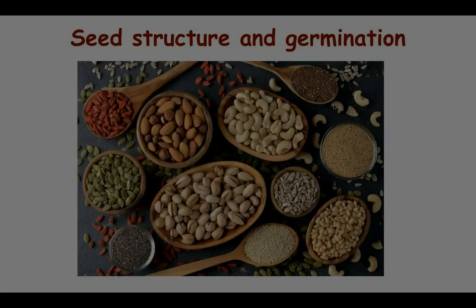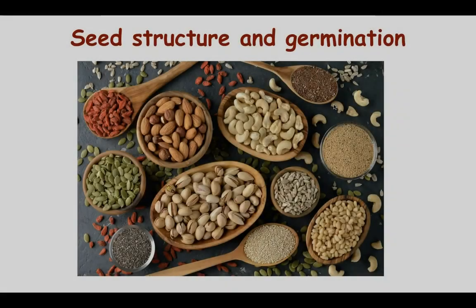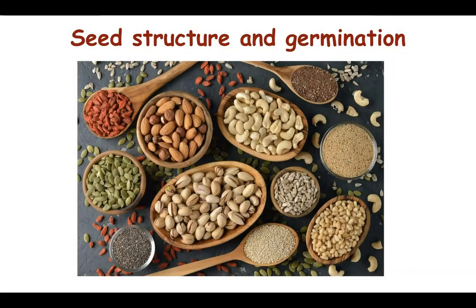Hello dear students, today we will be doing the chapter seed structure and germination. Seeds are formed once the flower has undergone maturity and the ovules change into the seeds, and the ovary changes into the fruits.